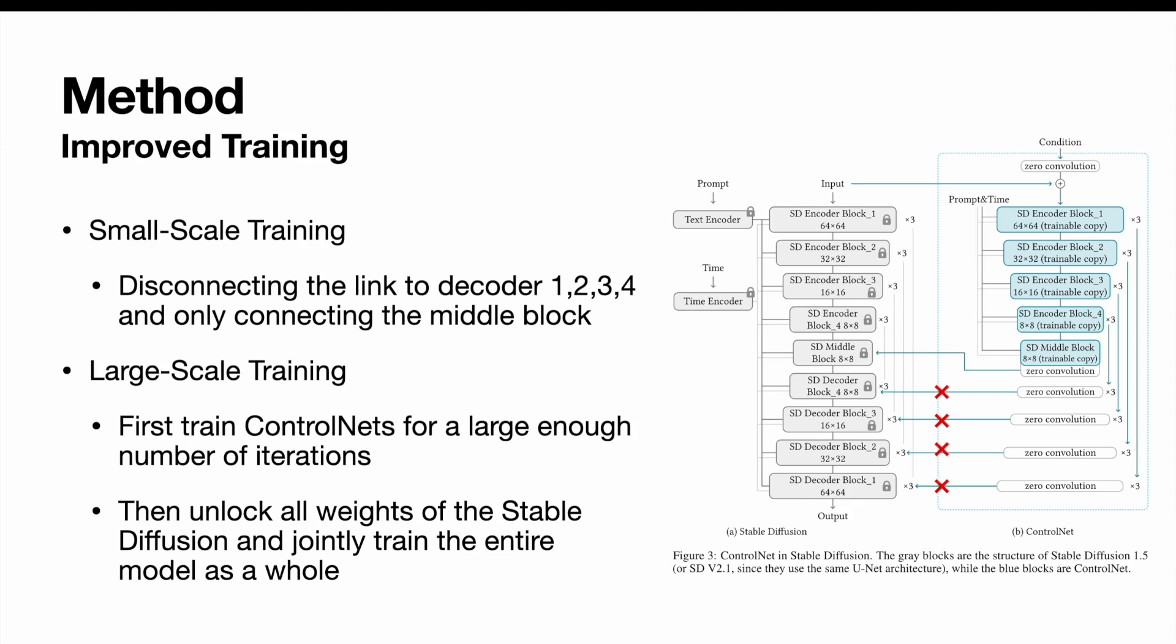The author also discussed several strategies to improve the training. When the computation devices are limited, the author finds that disconnecting the link to the decoder, only connecting the middle block can improve the training speed. While in situations where both powerful computation clusters and large datasets are available, we can first train ControlNet for a large enough number of iterations, and then unlock all weights of stable diffusion and jointly train the entire model as a whole.